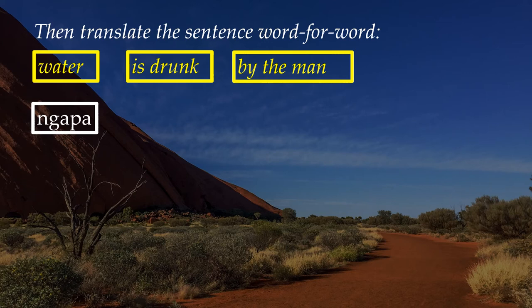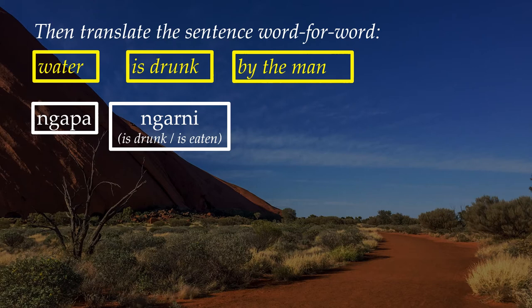So: ngapa, ngarni. If you look in the dictionary, ngarni means 'eat or drink' — that's how dictionaries will list it. But in actual fact, because it's an ergative language, it translates more like the passive in English: 'to be drunk,' 'to be eaten.' And the word for man is wadi. So 'by the man' is 'wadi-nge.'